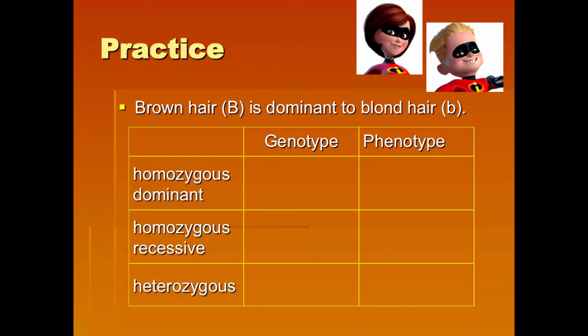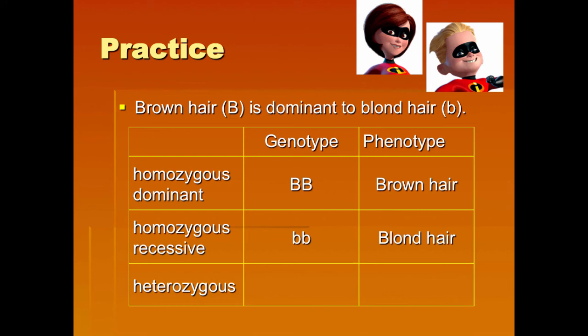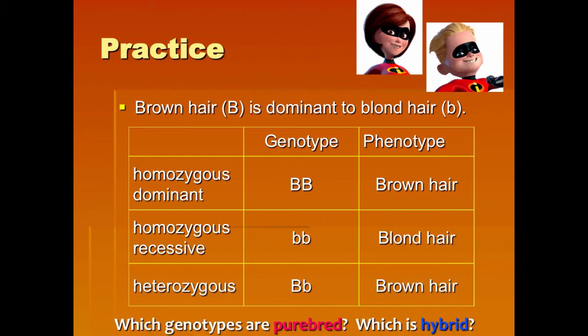Let's practice — this time with hair. Big B is dominant for brown hair, and little b is recessive for blonde hair. So what's dominant? Brown. Copy this box down. The genotype for homozygous dominant is big B, big B, and the phenotype is brown hair. The genotype for homozygous recessive is little b, little b, and the phenotype is blonde hair. Heterozygous would be big B, little b, and the phenotype would be brown because they have the dominant gene.